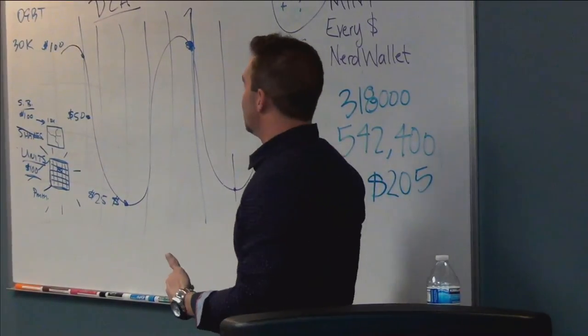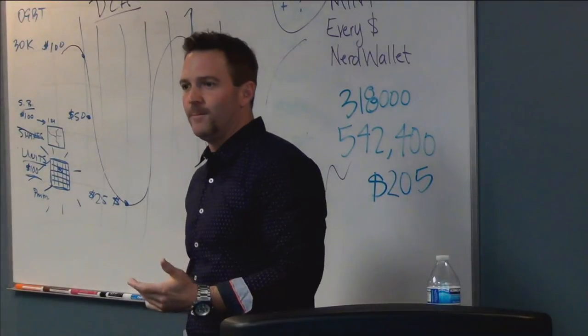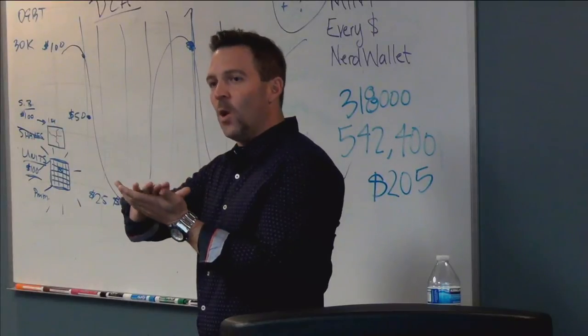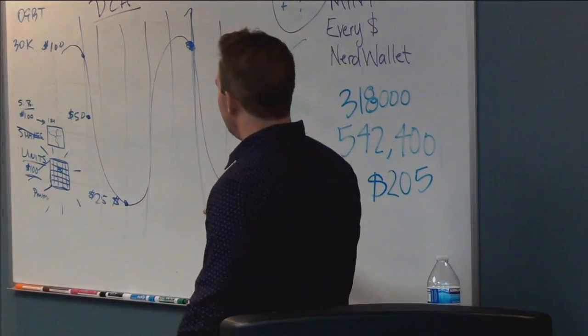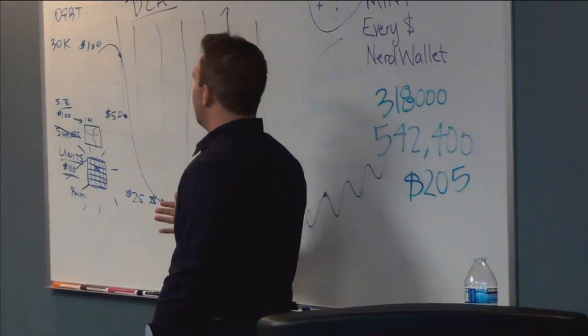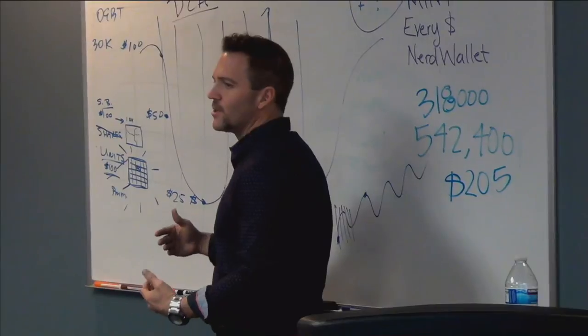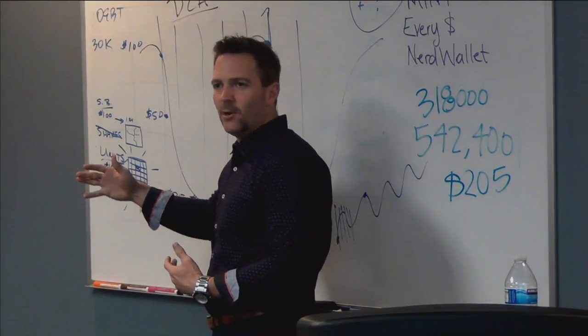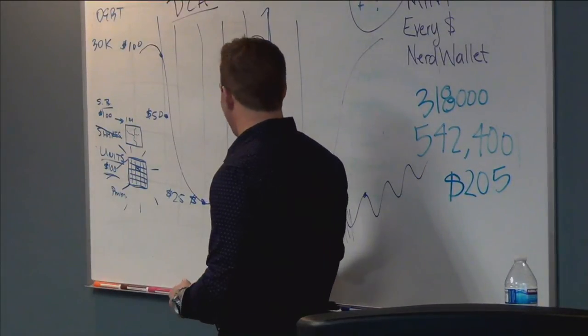The reason why is even something that simple, they had overlooked it because they thought with a guaranteed floor that you have on an IUL, they thought you're not able to really maximize by buying low necessarily, and there's no loss potential. So it's just locked in and always, you know, increasing.